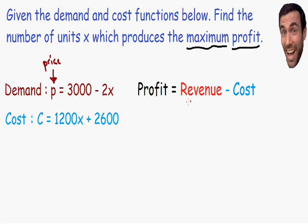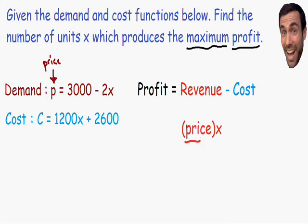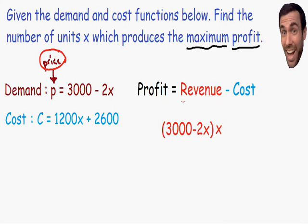So the revenue is equal to the price of the product multiplied by the number of units sold, x. Now let's pay attention to the price of the product and rewrite it in terms of x. From the demand equation — which is another way of expressing price — the price P is equal to 3000 minus 2x. So in the profit equation, we can replace the price with 3000 minus 2x. Now we have rewritten the revenue in terms of one variable x: revenue equals (3000 minus 2x) multiplied by x.